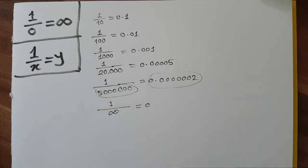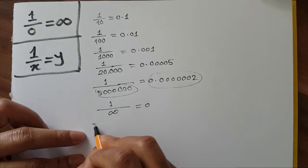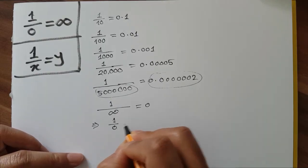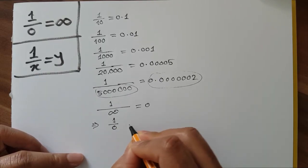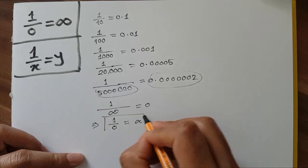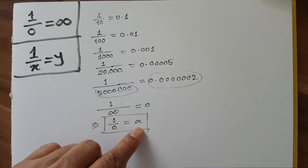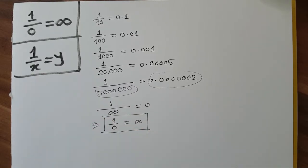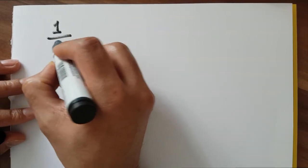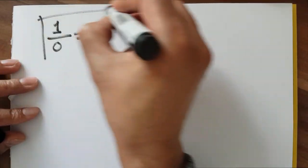If I increase this value to an infinitely large number — 1 over infinity — this value will be exactly 0, not just 0.000... So if I exchange that, then it will be 1 over 0, where 0 comes here and infinity is there. This is the explanation for why 1 over 0 is equal to infinity.